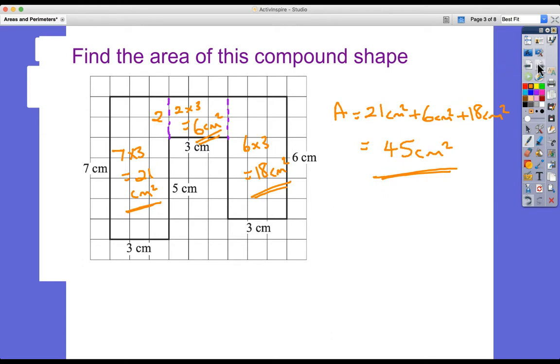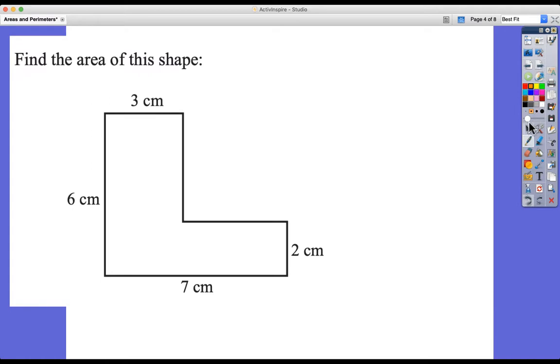Next one. What about this one then? So this time we haven't got the squares. So we have to think about how we might divide this up. Now, we've got two options. We could either divide it up like that or we could divide it up like that. Doesn't really matter. We'll stick to that one seeing as it's there. So this one, three by six, really easy to see. First of all, three times six, which is 18 centimeters squared.